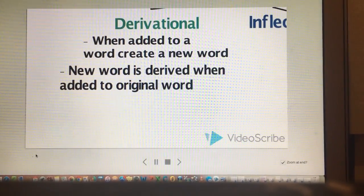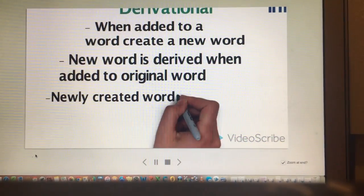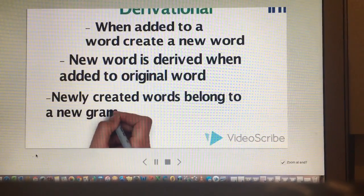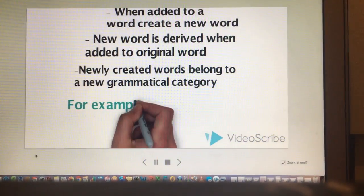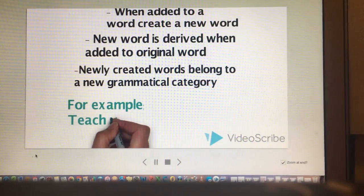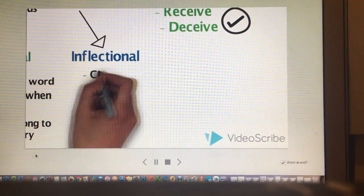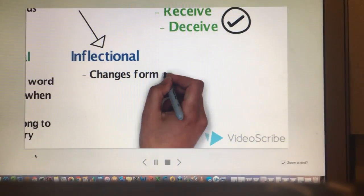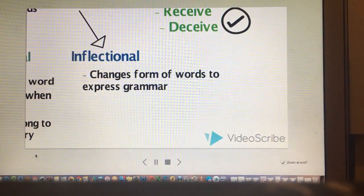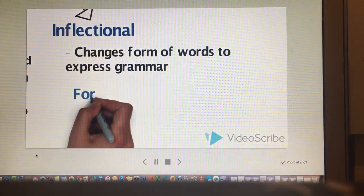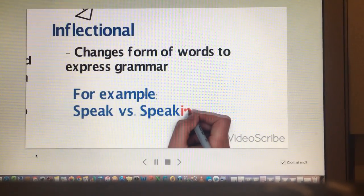Many times these newly created words belong to a new grammatical category. Like for example, adding the suffix -er to teach changes it from the verb teach to the noun teacher. By contrast, inflectional changes the form of words in order to express grammar. For example, adding -ing to the word speak changes it to speaking, a different grammatical form.